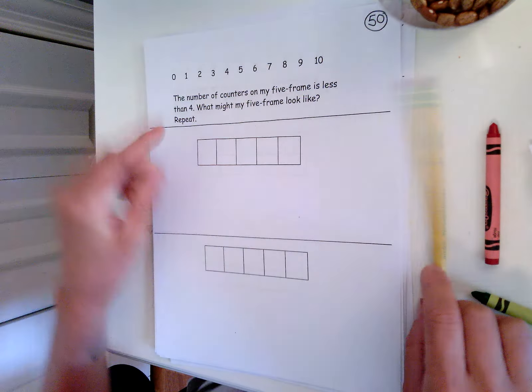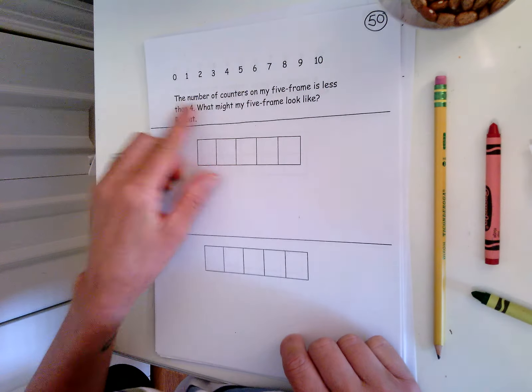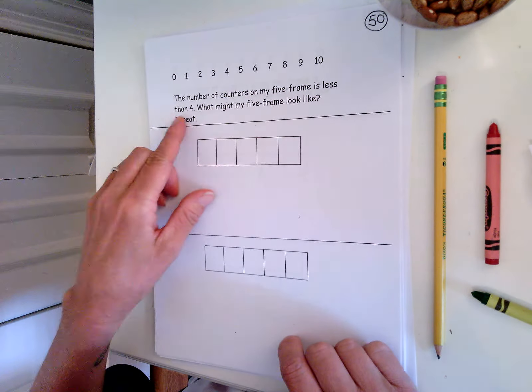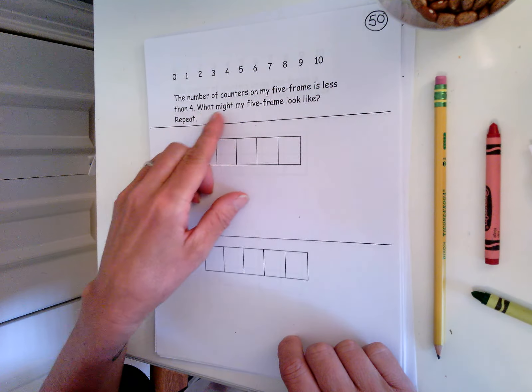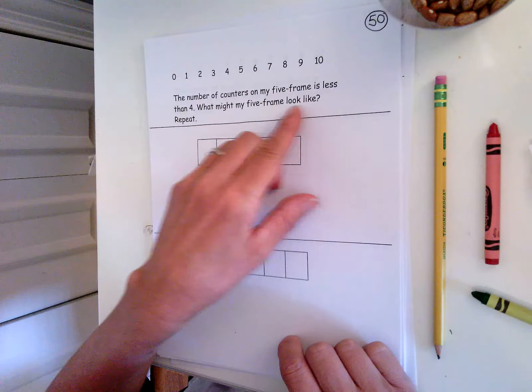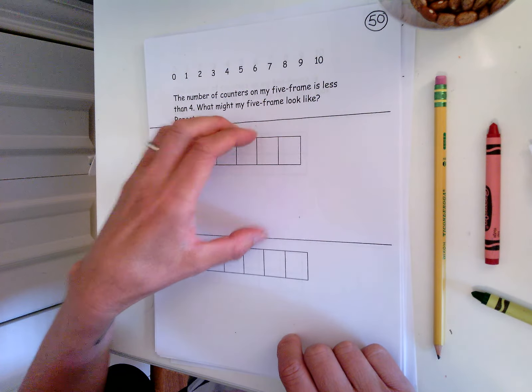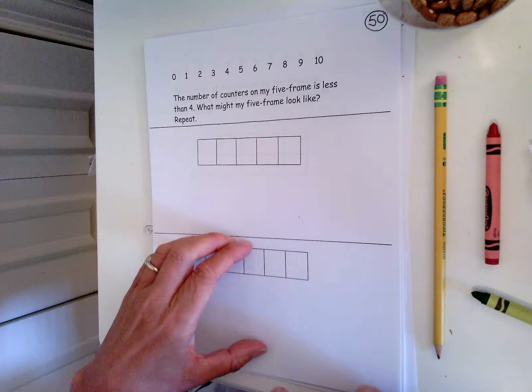So here's our problem. The number of counters on my five frame is less than four. What might my five frame look like? Repeat, so we're going to do it two times. We'll do it here together and then this bottom part you'll do it by yourself.